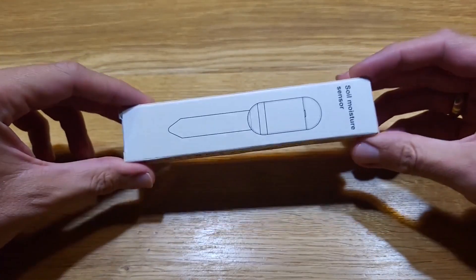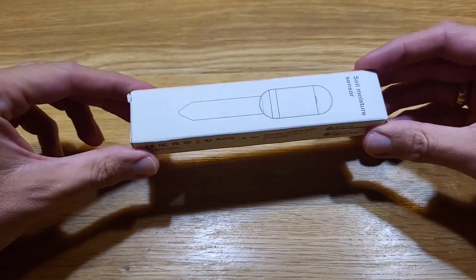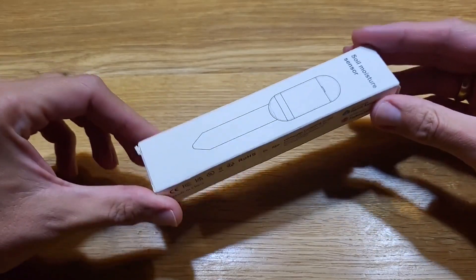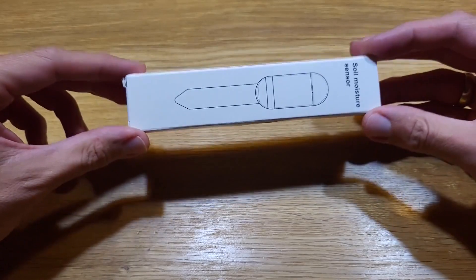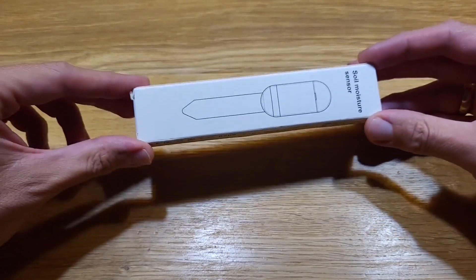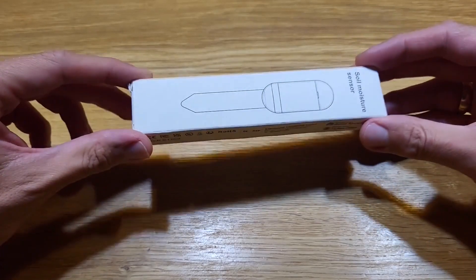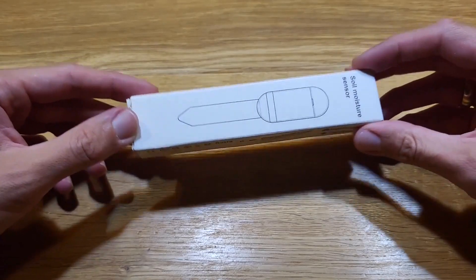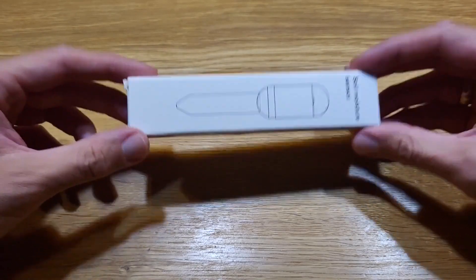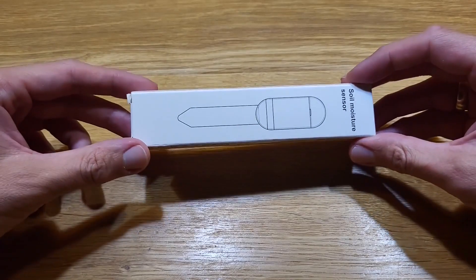I'm gonna start with some description of this product. So this is a soil moisture sensor which works over Zigbee and you can find two versions - one that works with the TUYA application and another which is for the Home Assistant. As you may know, I prefer Home Assistant, so I have a version for Home Assistant and it needs two AA batteries.